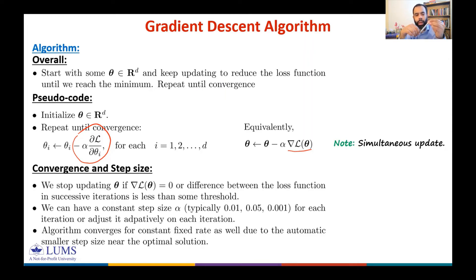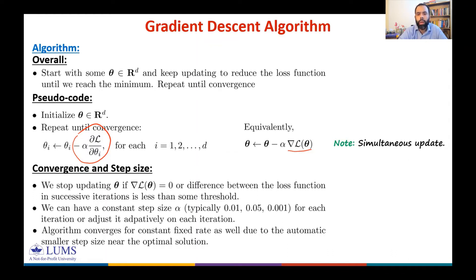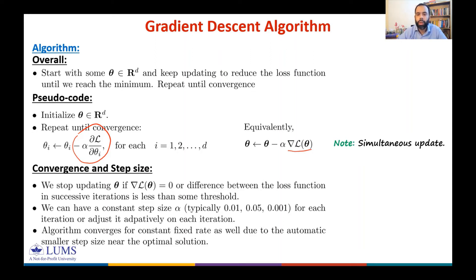This produces a smaller effective step size near the optimal solution. You now have a basic understanding of gradient descent: it is an iterative algorithm that keeps updating unknown variables in the direction of the negative gradient — the direction of steepest descent.